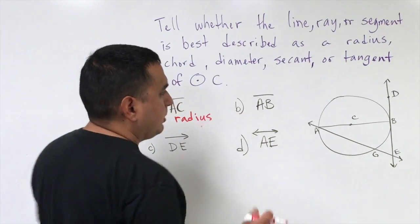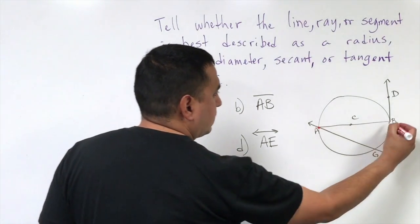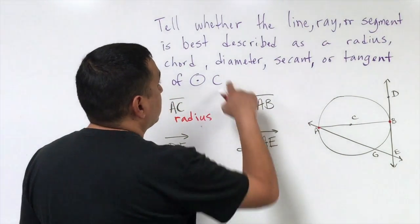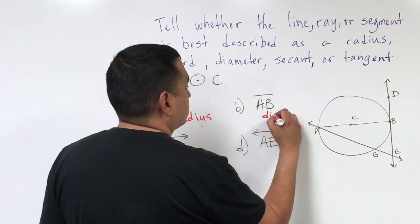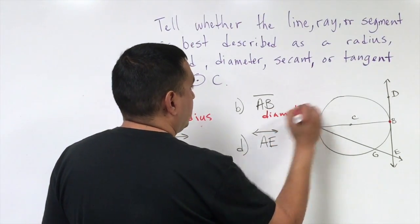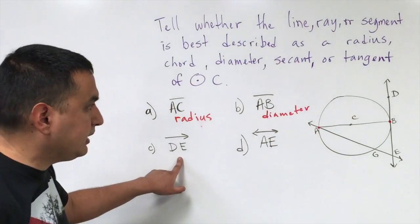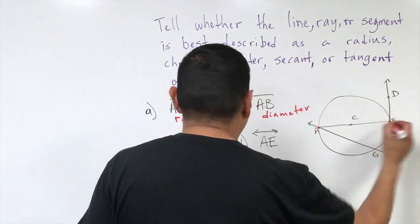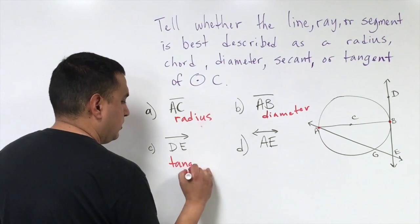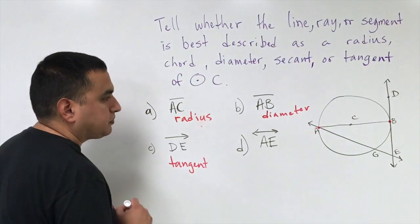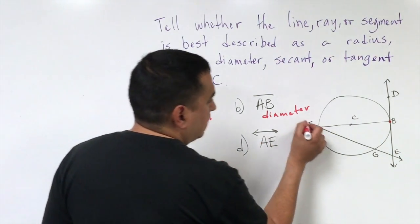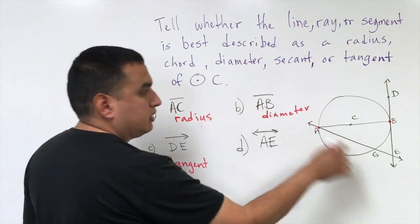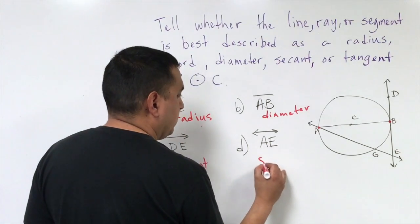Segment AB goes from one side of the circle to the other, so technically it is a chord, but it's a special type of chord — so it's a diameter. Ray DE goes from here on the outside, so that's going to be a tangent. And line AE goes all the way across past the sides of the circle, so that's going to be a secant.